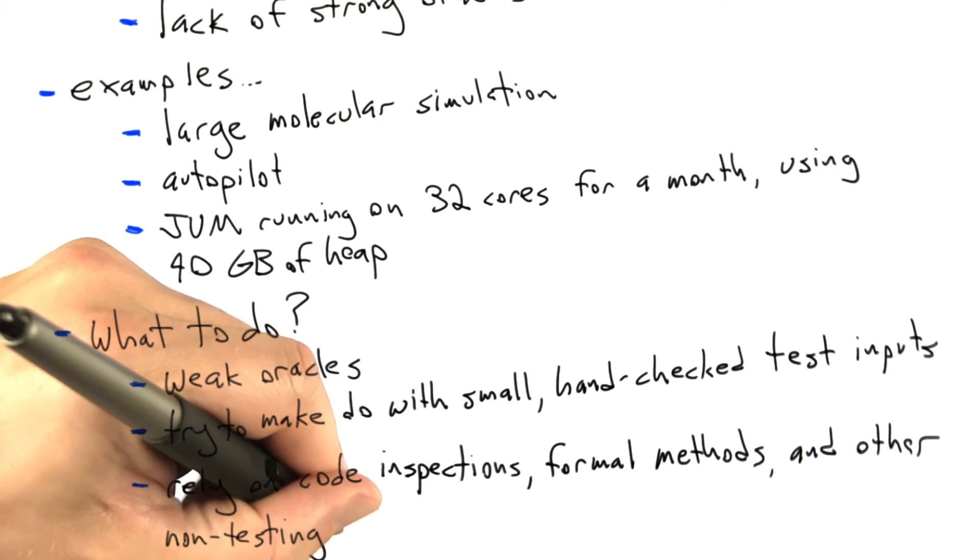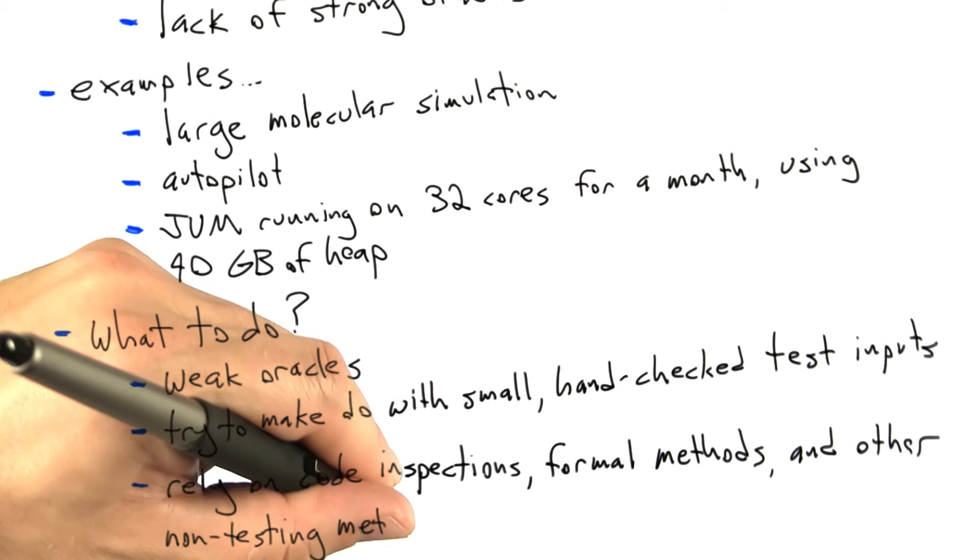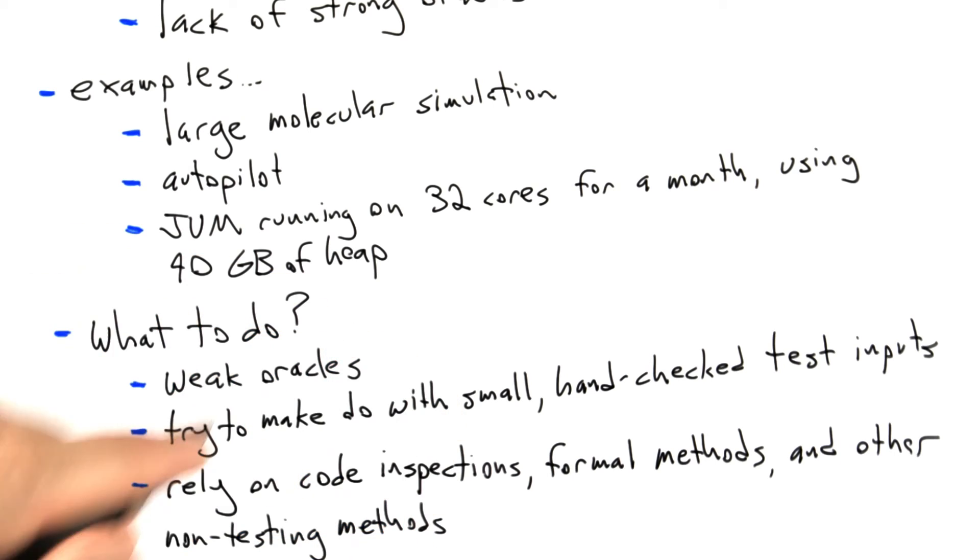And in the end, if we're thwarted in our attempts to do really good testing, we probably have to rely on non-testing methods. Of course, we should be doing code inspections and using formal methods on our systems in any case if we care about their reliability. But what's happening here, if we really can't test the system effectively, we might have to rely on these things more than we would have liked.